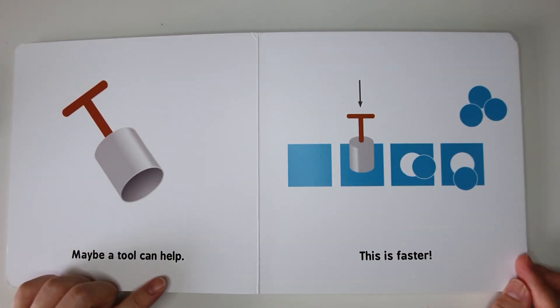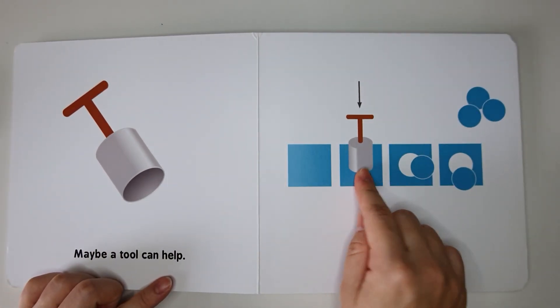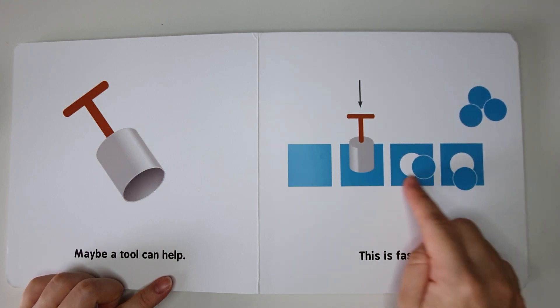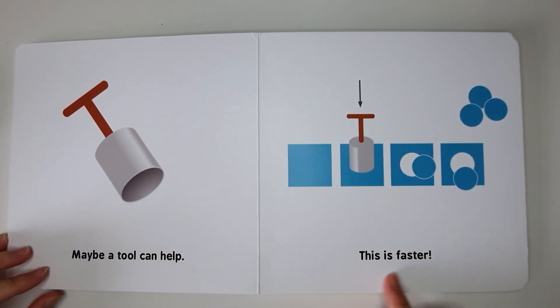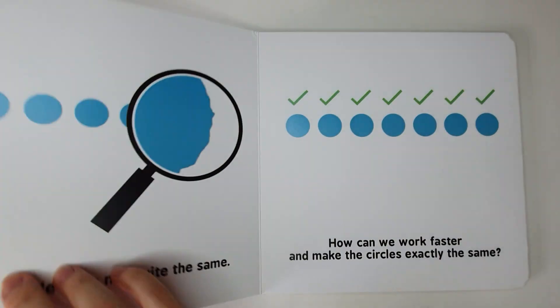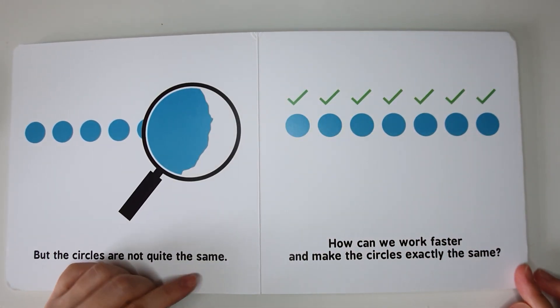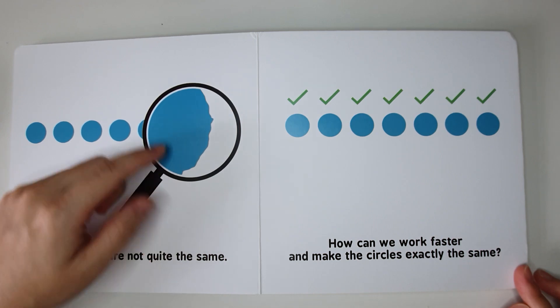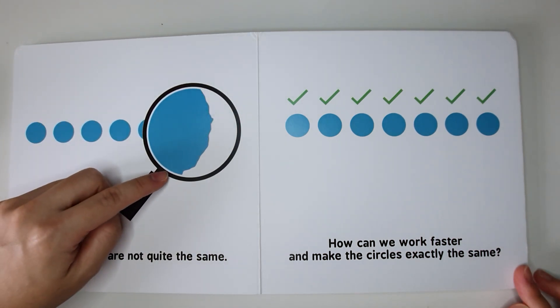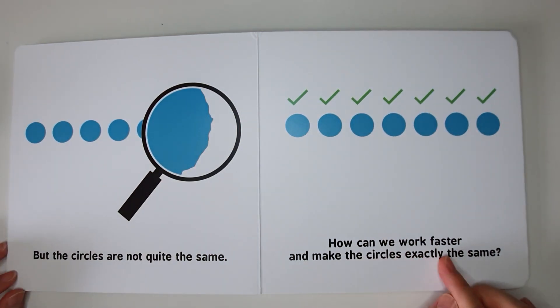Maybe a tool can help. With the tool, we can cut the circle from each piece of paper. This is faster. But the circles are not quite the same. If you look closely, each of the circles are jagged. How can we work faster and make the circles exactly the same?